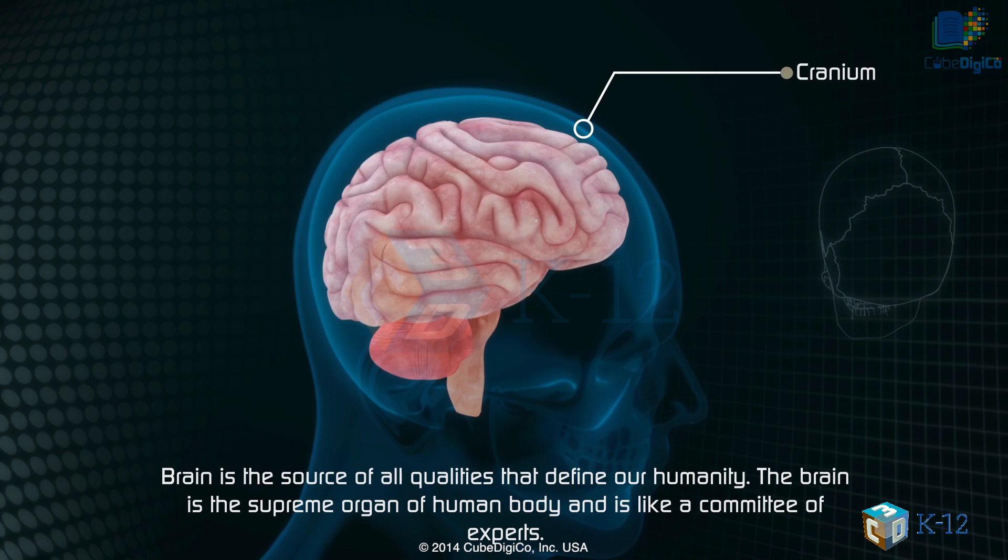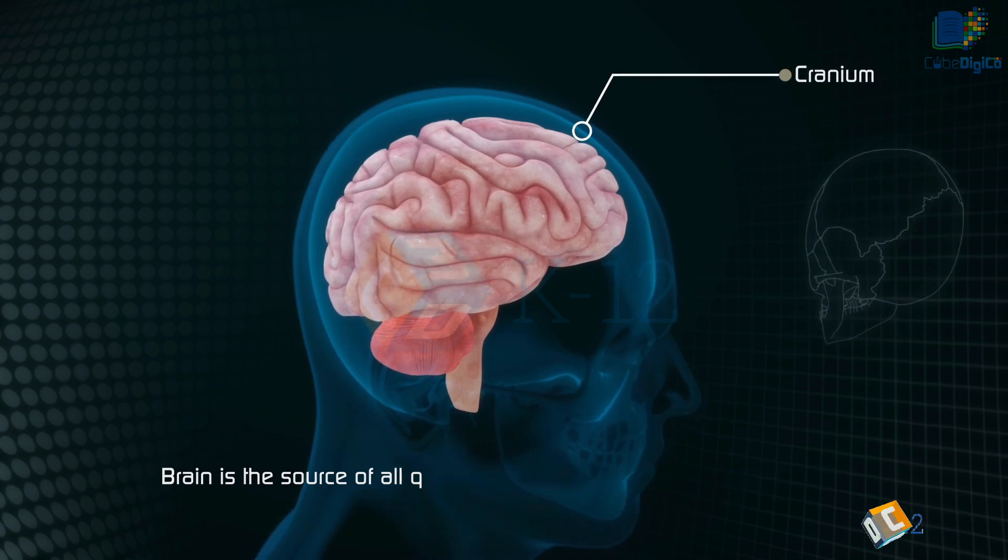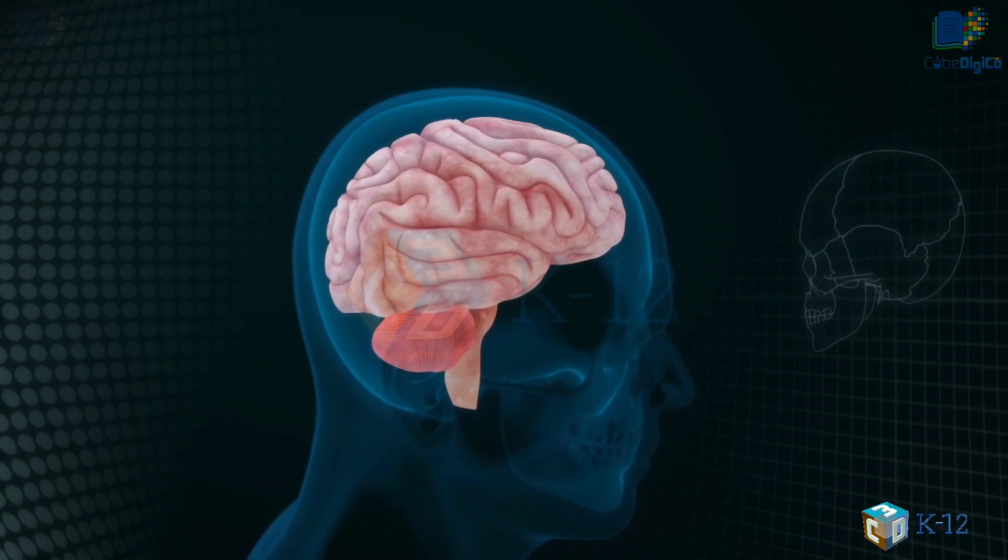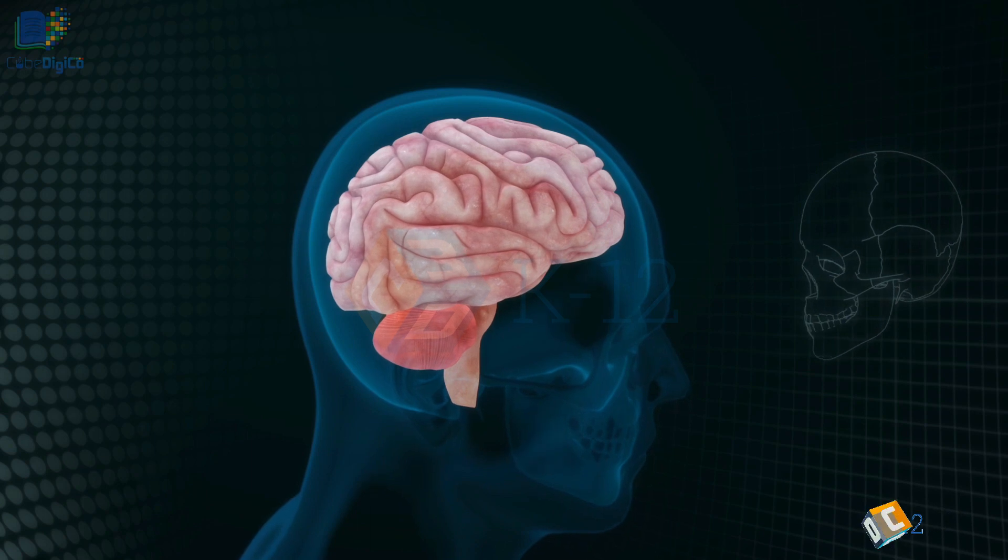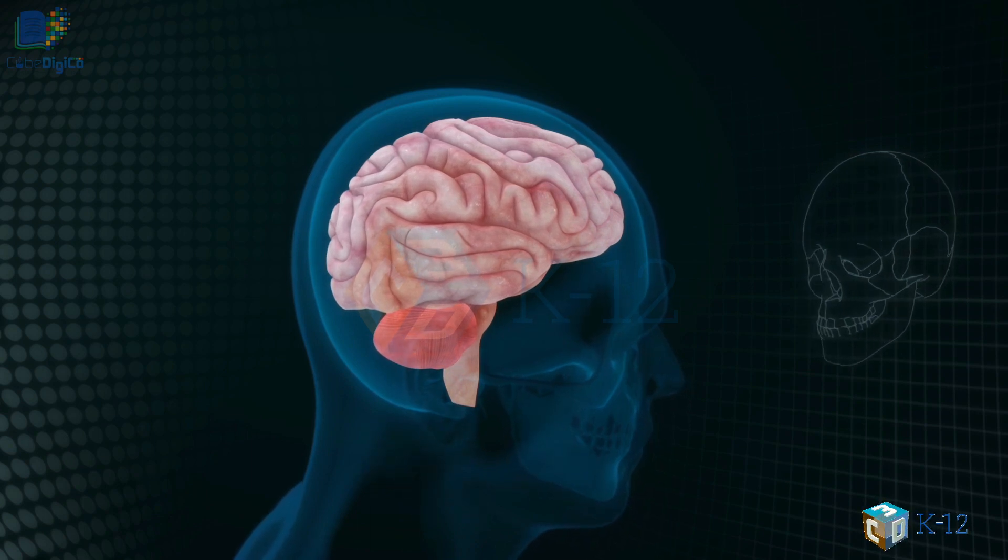All the parts of the brain work together but each part has its own special properties. Here we will learn the major parts, where they are located and what they are responsible for.